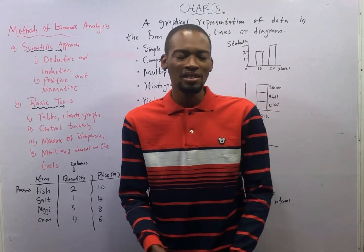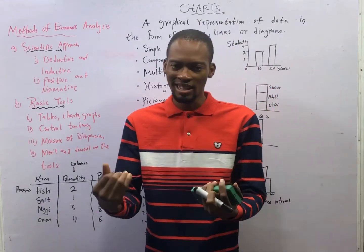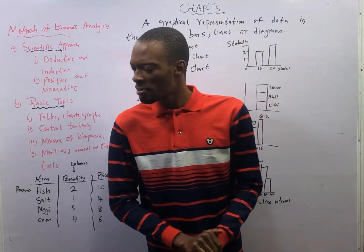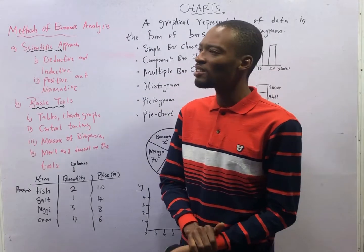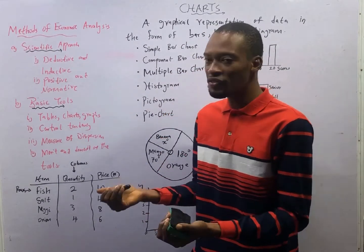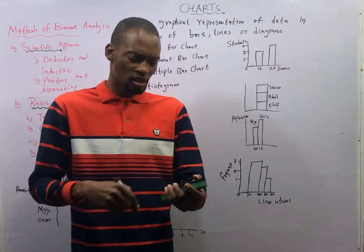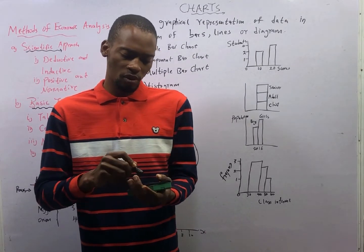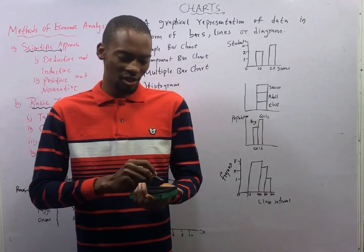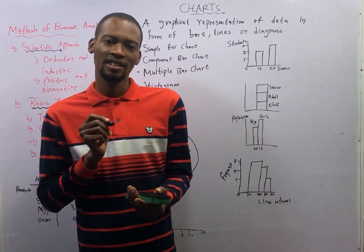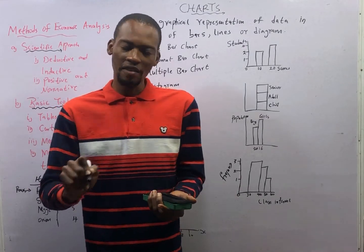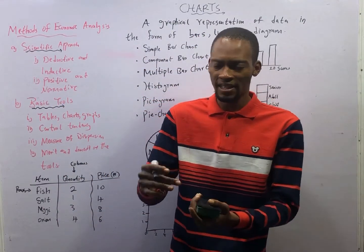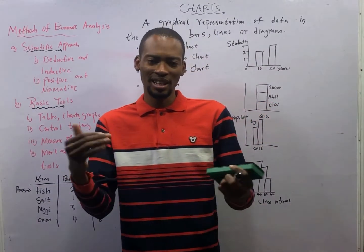A table is a representation of data in rows and columns. What is data? Data are facts. For example, if your mom sends you to buy something at the market and you write it down — paper, Maggi 2 pieces at 20 naira, salt 1 sachet at 15 naira, fish 2 at 500 naira — in that case, you are putting down data. Data are facts, and when you process data, you get complete information.